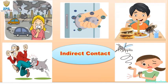Insect bites are another way diseases spread. Insects are usually called vectors of diseases. These include mosquitoes, fleas, and ticks. This kind of insect can usually transfer disease through their bites.